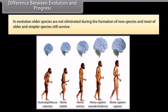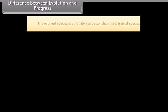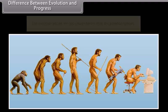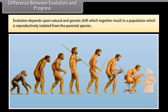In evolution, older species are not eliminated during the formation of new species, and most older and simpler species still survive. The evolved species are not always better than the parental species. Evolution depends upon natural selection and genetic drift, which together result in a population that is reproductively isolated from the parental species.